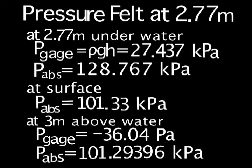Here is some information about pressure. At 2.77 meters under the water, the gauge pressure was 27.43 kilopascals. The absolute pressure, which is a column of air and the water and the gauge pressure combined, is approximately 128.767 kilopascals. At the surface, the absolute pressure was 101.33 kilopascals.